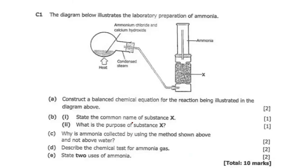C1: the diagram illustrates a laboratory preparation of ammonia. Ammonia can be prepared in the lab, and commercially it is prepared in the Haber process. In the laboratory setup, you need to apply heat to a mixture of ammonium chloride and calcium hydroxide. Make sure the flask you are heating is slanted, to avoid steam from boiling water flowing back into the flask, because if steam went backward it could cause an explosion.